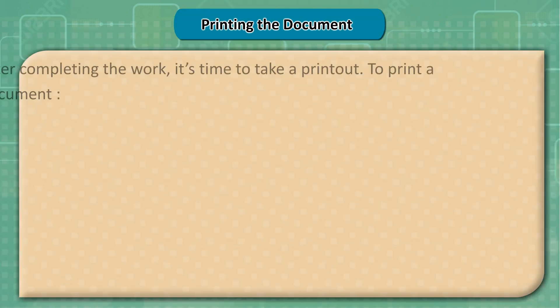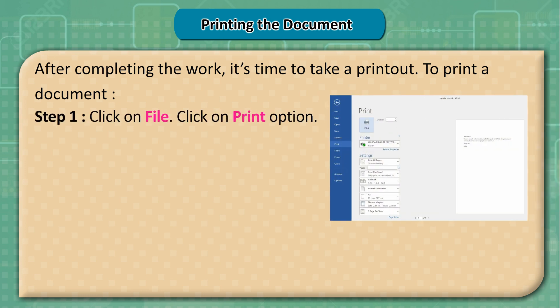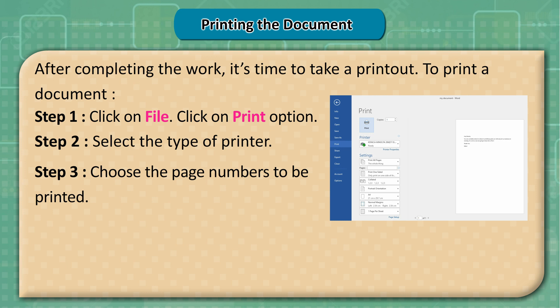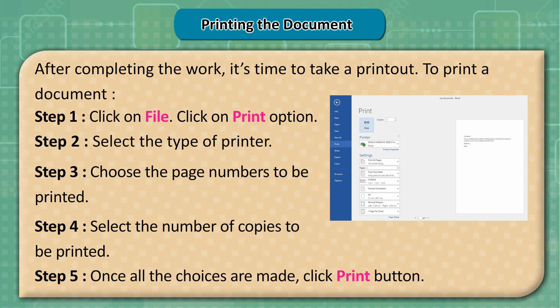Printing the Document: After completing the work, it's time to take a printout. Step 1: Click on File, then click on Print. Step 2: Select the type of printer. Step 3: Choose the page numbers to be printed. Step 4: Select the number of copies to be printed. Step 5: Once all choices are made, click the Print button.